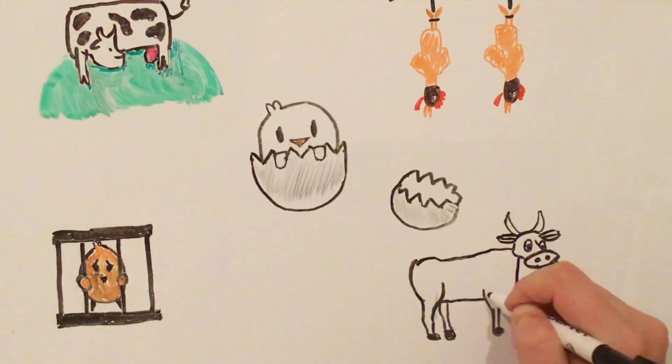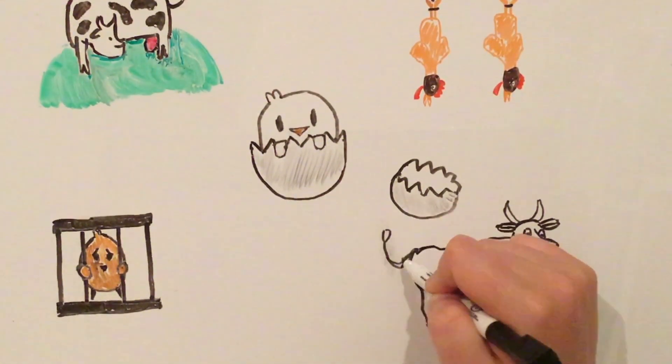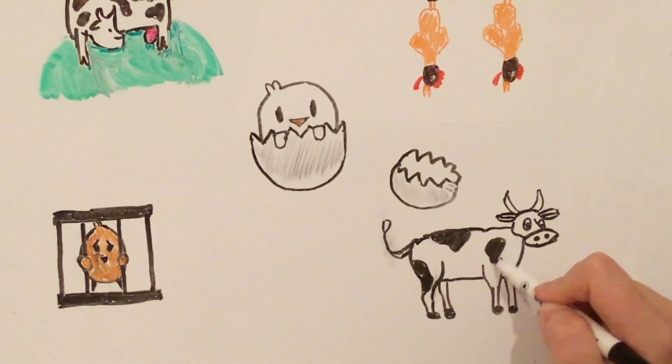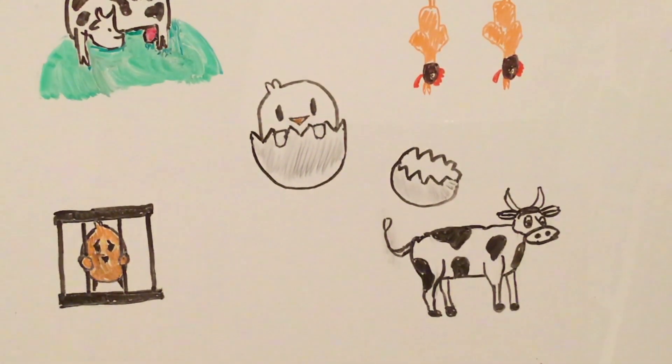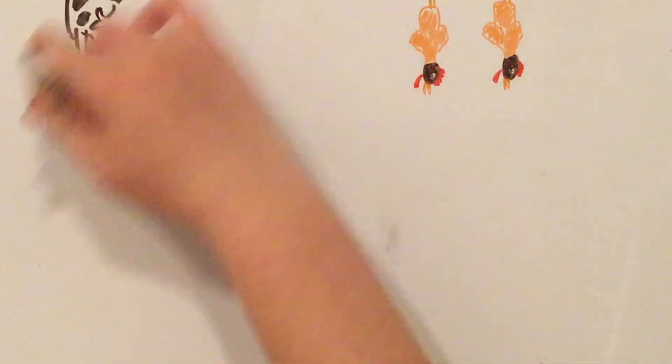Even before dairy cows are killed, they suffer because of the process we use for milking in factory farms. The cows are never taken off the milking device. This continual suction on the udders causes bleeding and infection, which causes blood and pus to get into the milk. This is one reason why the milk is pasteurized.